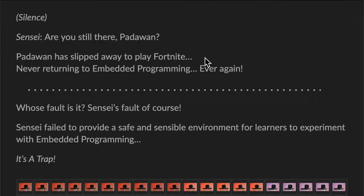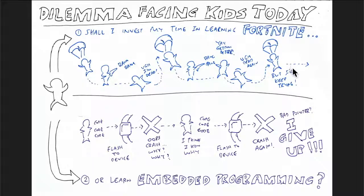So whose fault was it? Sensei's fault, I think. Sensei failed to provide a safe and sensible environment for learners to experiment with embedded programming. In short, it's a trap. So if you think about it, why would anybody want to go through all these hoops to code, flash, and crash, code again, flash, and crash, and giving up at the end?